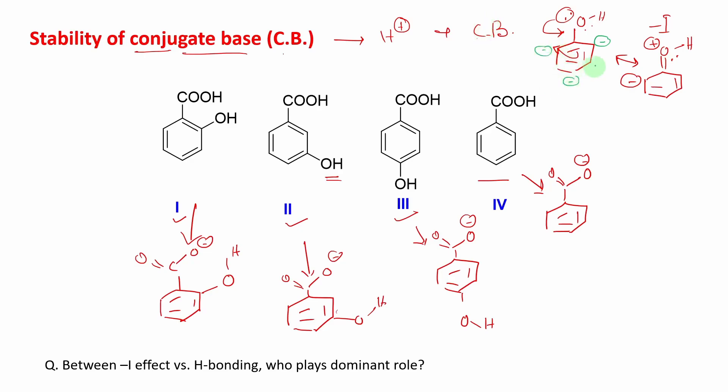Now one thing: if any electron withdrawing group, or in this case this carboxylate anion, is present in this ortho or para position, then that will be stabilized to a lesser extent. Why? Because already that ortho position has some extra electron density and you are trying to delocalize the carboxylate ion's extra electron density through that—not possible.